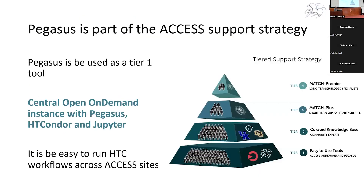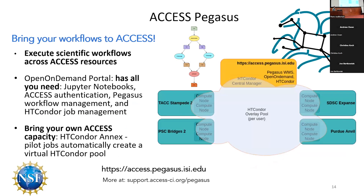Some new developments over the past year: Pegasus is also part of the ACCESS support strategy. ACCESS is the successor to XSEDE — it's a collection of large NSF-funded supercomputing resources all over the US. The vision is that Pegasus is to be used as a tier-one tool for users to come into the ACCESS website and see what they can do to run workflows or access resources. Along with Open OnDemand, we have a central instance available to all ACCESS users, and they can easily run HTC workflows across ACCESS sites.